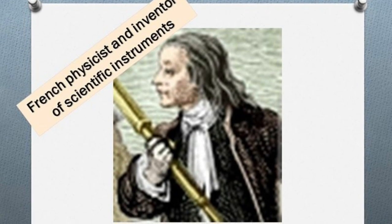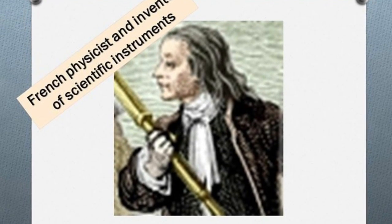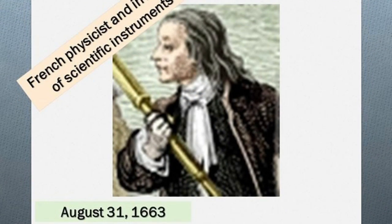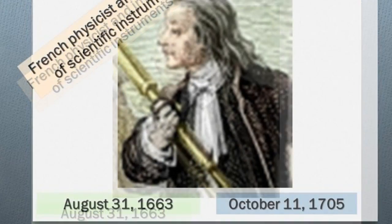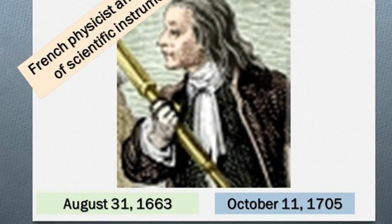Amontant was a French physicist and inventor of scientific instruments. He was born on August 31, 1663 and died on October 11, 1705.